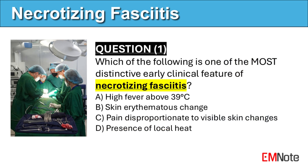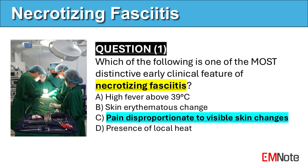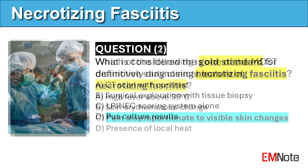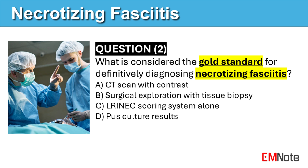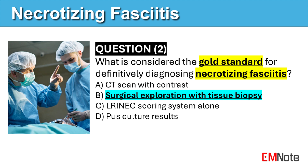Question number one: Which of the following is one of the most distinctive early clinical features of necrotizing fasciitis? The correct answer is C. Early diagnosis is critical but challenging, as it can initially resemble cellulitis. One of the most important distinguishing features is pain that is disproportionate to the visible skin changes. The correct answer to the next question is B: surgical exploration and tissue biopsy remain the gold standard, with fascial necrosis and foul-smelling pus being diagnostic.